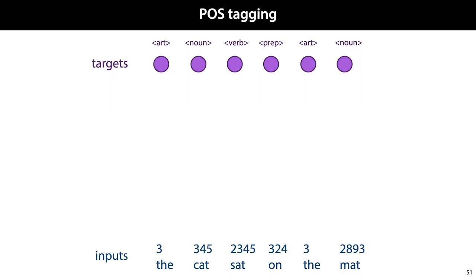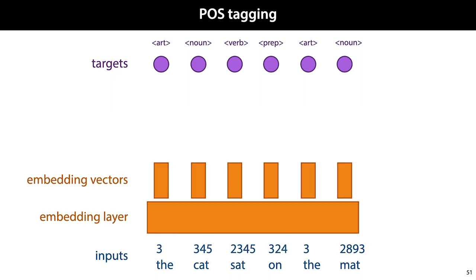This sequence of integers is fed to an embedding layer, which gives us a sequence of embedding vectors. And note that we have to decide beforehand what the size of our vocabulary is. If we keep a vocabulary of 10,000 tokens, then the embedding layer will create 10,000 embedding vectors for us.